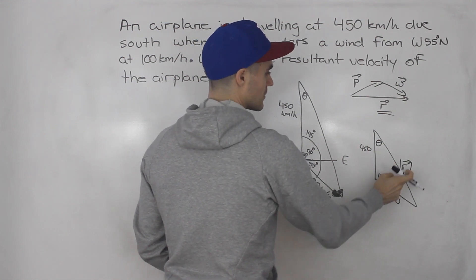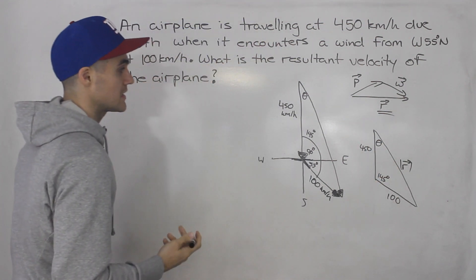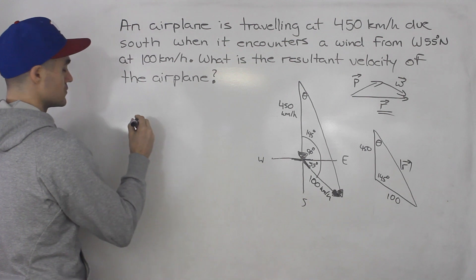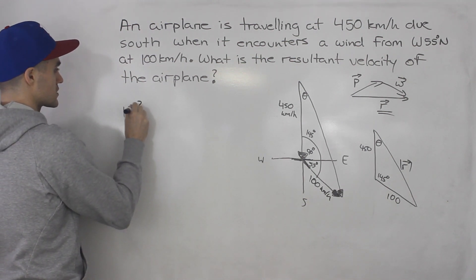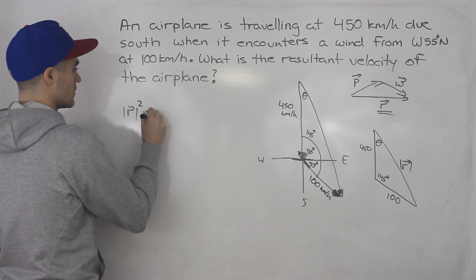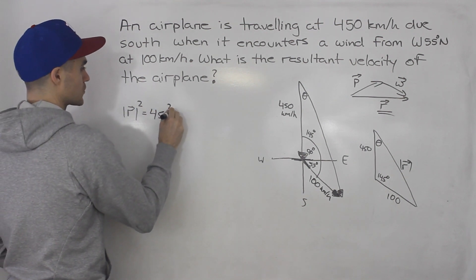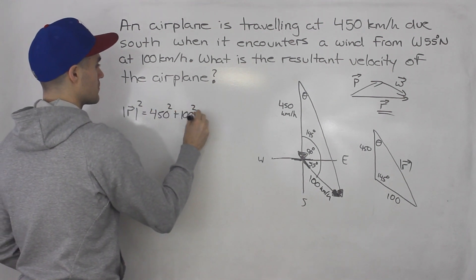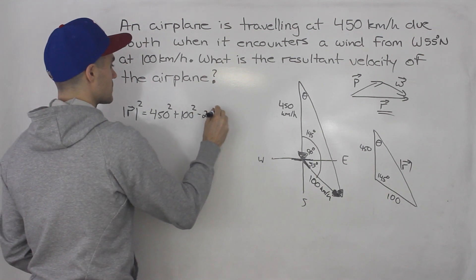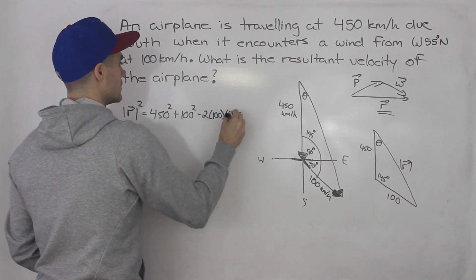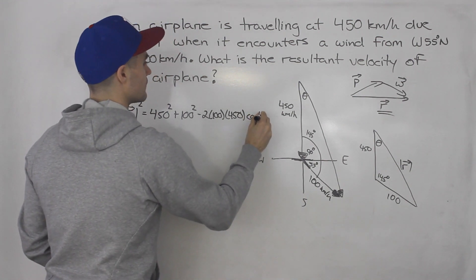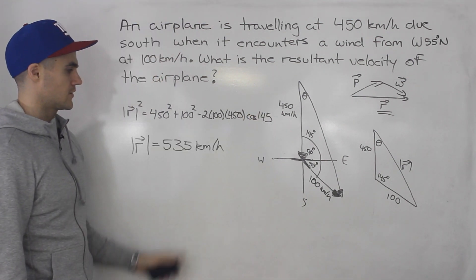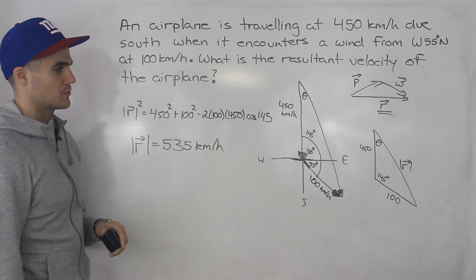Alright, so let's start off by solving for that resultant speed. So to do that we would do cosine law. So we got the resultant squared equals 450 squared plus 100 squared minus 2 times 100 times 450 times cos of 145. So when you do that in the calculator, you end up getting 535 kilometers per hour.